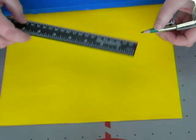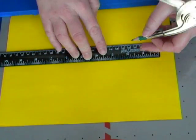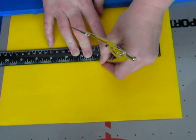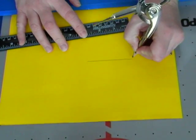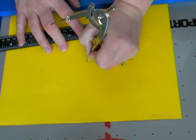To do an equilateral triangle, we begin by drawing a segment. We're going to label the segment AB.